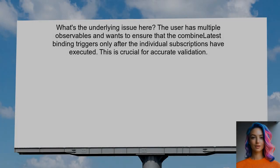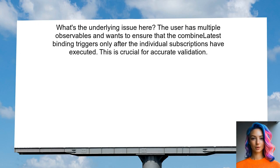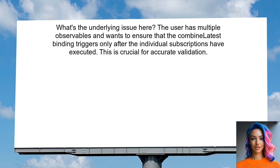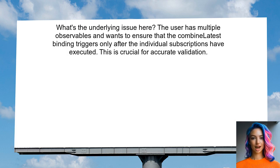This is particularly important when dealing with properties that need to be set before validating data. The user has multiple observables, and they want to ensure that the combined latest binding triggers only after the individual subscriptions have executed. This is crucial for accurate validation of the account details.